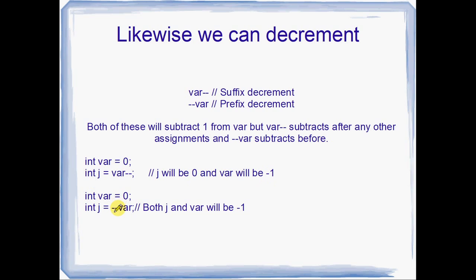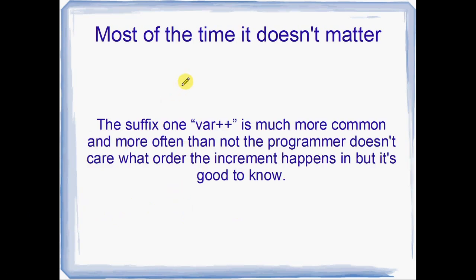Or we could use the prefix decrement. We put the -- at the prefix of the variable's name. So --var, and this time they'll both have negative one. So the variable will be decremented, and zero minus one gives you that, negative one. And then j is going to get the value of that.